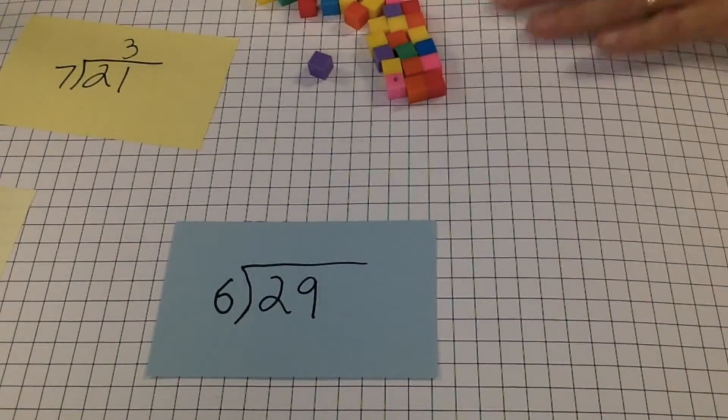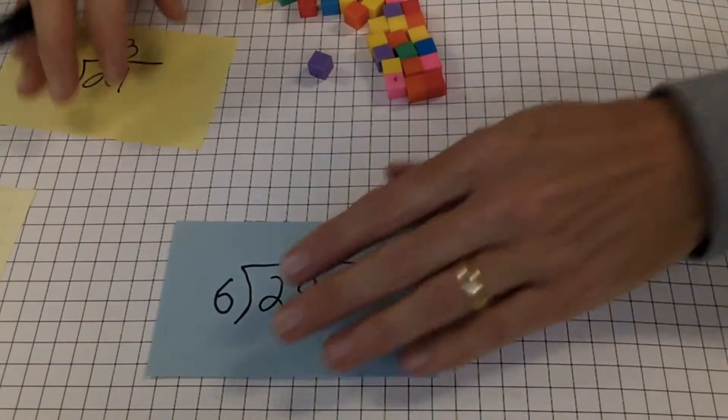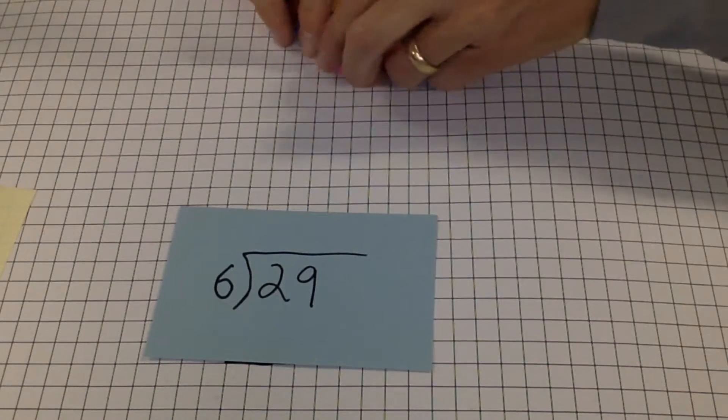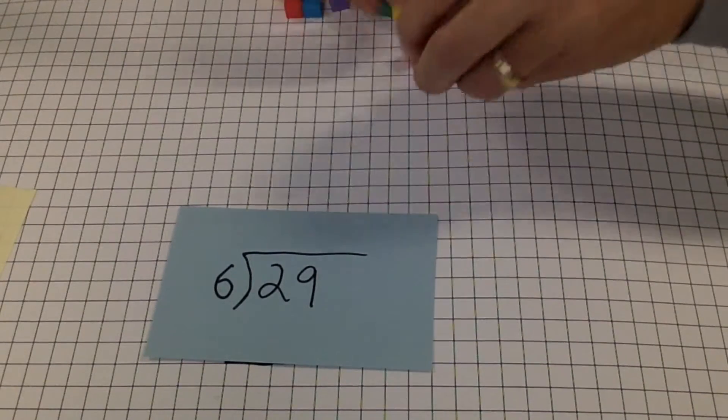What if we have 29 being divided by 6? The simple way to do it with cubes, pennies, anything small like this, is to just take 29 and start putting them in rows of 6 again.